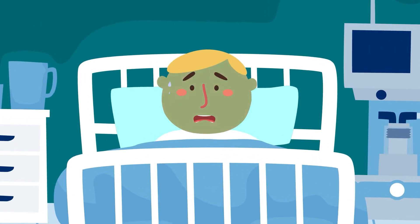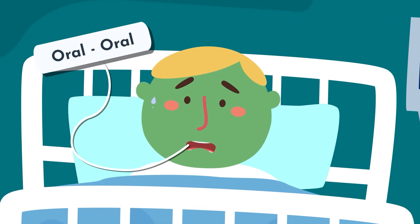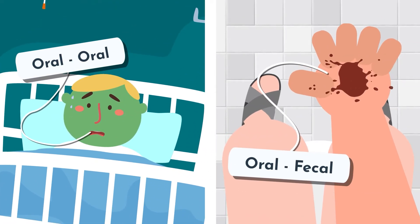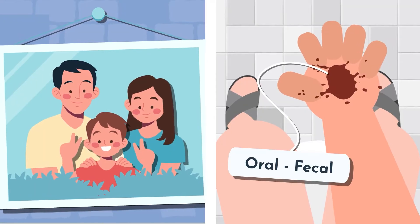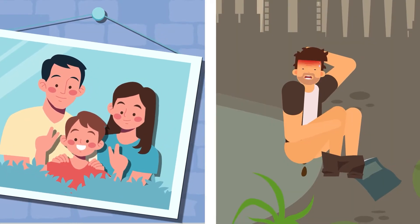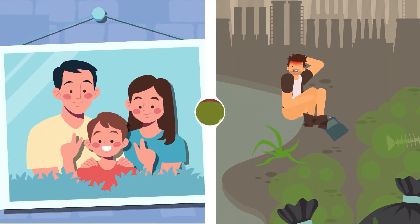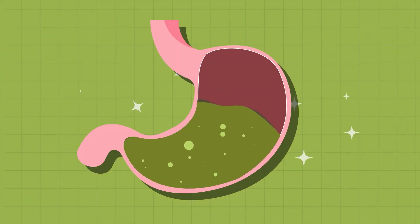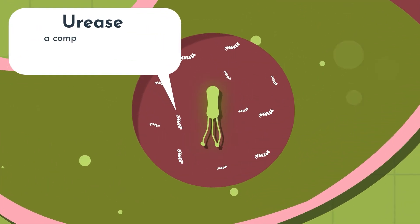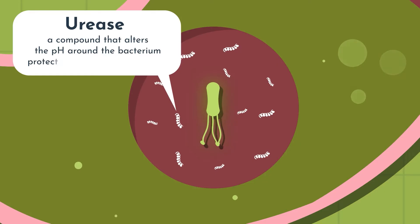H. pylori is transmitted through various routes including oral-oral and oral-fecal, commonly occurring between family members and in areas with inadequate sanitation. The bacterium is well adapted to survive in the acidic environment of the stomach. It releases urease, a compound that alters the pH around the bacterium, protecting it from stomach acid.